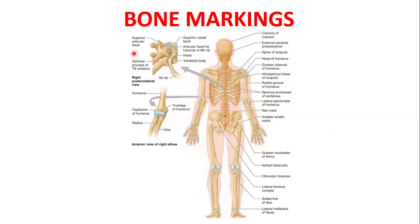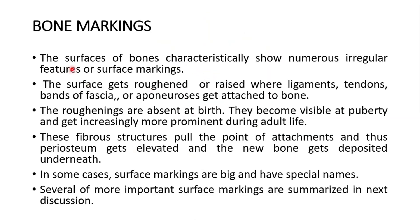Hi, I am Dr. Saki Mansur and today I will discuss with you bone markings or the bone surface markings. The surfaces of bones characteristically show numerous irregular features or surface markings. The surface gets roughened or raised where ligaments, tendons, bands of the fascia, or aponeurosis get attached to bone. The roughenings are absent at birth, become visible at puberty, and get increasingly more prominent during adult life. These fibrous structures pull the point of attachments, thus the periosteum gets elevated and new bone gets deposited underneath. In some cases surface markings are big and have special names.